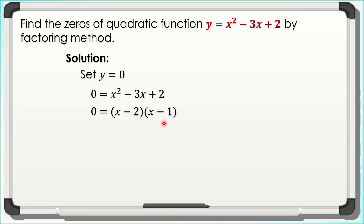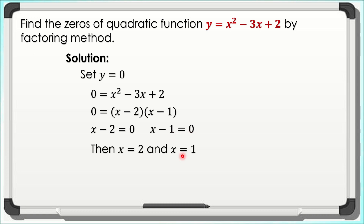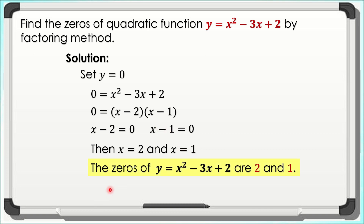Using the zero product property, x − 2 = 0 and x − 1 = 0. Then, using the addition property of equality, x = 2 and x = 1. Therefore, the zeros of y = x² − 3x + 2 are positive 2 and positive 1.